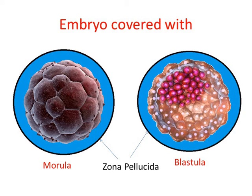Hence, zona pellucida is required to rupture before implantation in the uterus. In this way, the process of blastulation takes place.